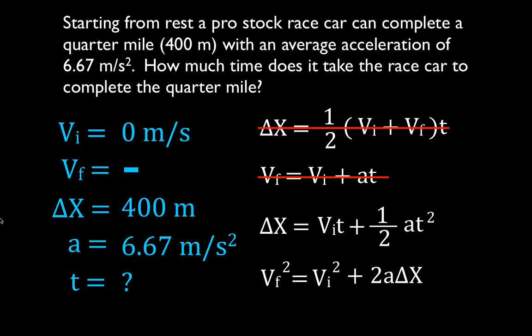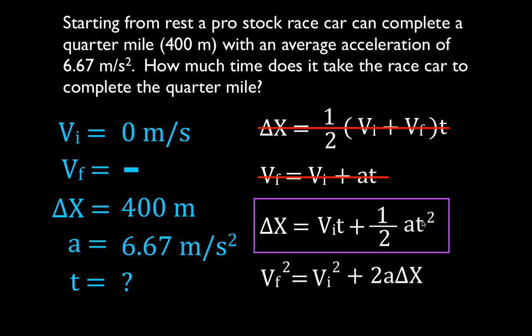Now the third equation — once again we're solving for time, and it has the time in it. Do we know the other three variables? Delta x — yes. Initial velocity — yes. And the acceleration — yes, we know the acceleration. So we know all three other variables, which means we're going to use this equation to solve this problem. The last equation doesn't have time in it, so we could not use that one.